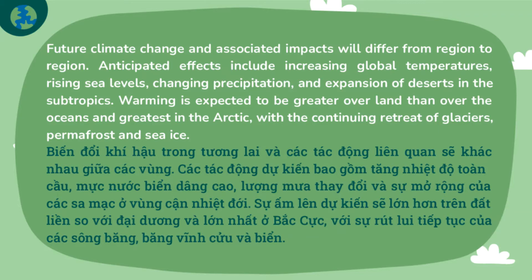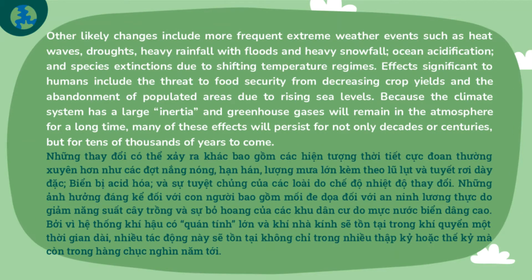Other likely changes include more frequent extreme weather events such as heat waves, droughts, heavy rainfall with floods and heavy snowfall, ocean acidification, and species extinctions due to shifting temperature regimes. Effects significant to humans include the threat to food security from decreasing crop yields and the abandonment of populated areas due to rising sea levels. Because the climate system has a large inertia and greenhouse gases will remain in the atmosphere for a long time, many of these effects will persist for not only decades or centuries, but for tens of thousands of years to come.